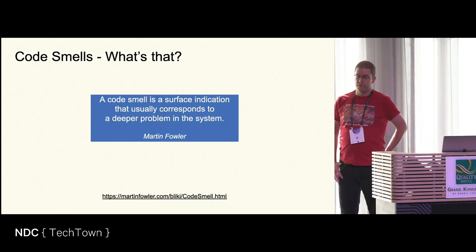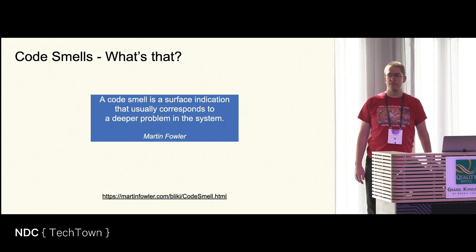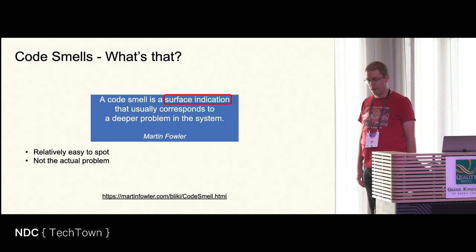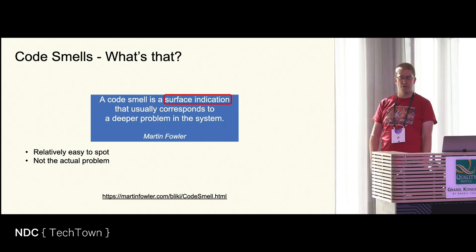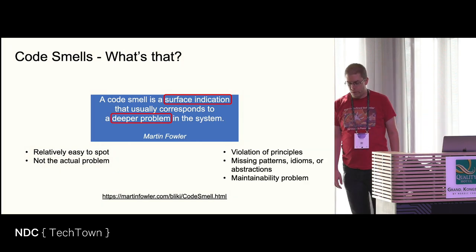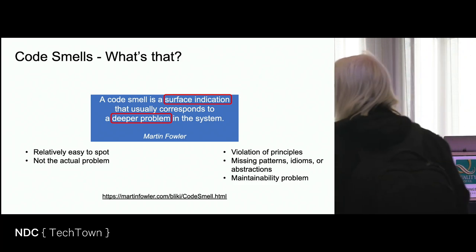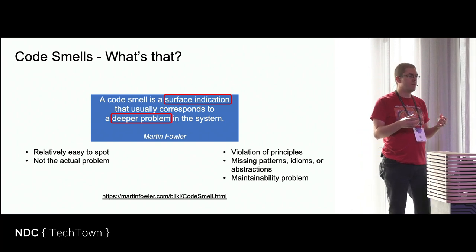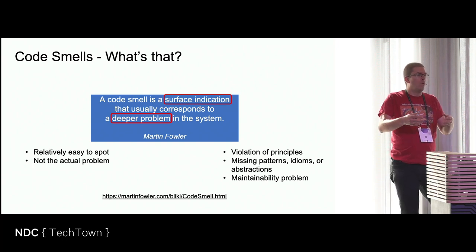So what's a code smell? This is a definition by Martin Fowler: a code smell is a surface indication that usually corresponds to a deeper problem in the system. Like the image we just saw, that's an indication that something's wrong, but it's a surface indication. The code smell itself is not the actual problem — we have to look deeper and understand what the problem behind the smell might be. The deeper problem, when we talk about code smells, is usually a violation of programming or design principles, missing abstractions, or idioms we could use.